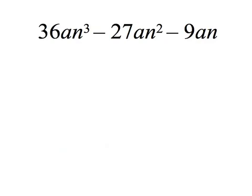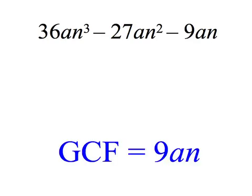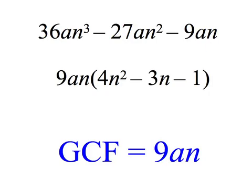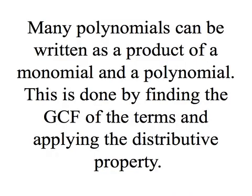Here's another one. Since the first term is positive, we'll just find the GCF. We won't try to make it negative. That's 9an. We factor it out, and inside the parentheses, we still have the first term positive. We leave the subtractions alone, and we get 9an times the quantity 4n squared take away 3n take away 1. And notice, 9an divided by itself is 1. Only in this case, instead of plus 1, it's take away 1. Many polynomials can be written as a product of a monomial and a polynomial. This is done by finding the greatest common factor of the terms and applying the distributive property.